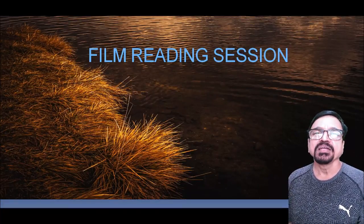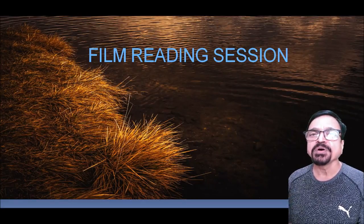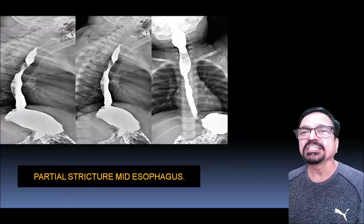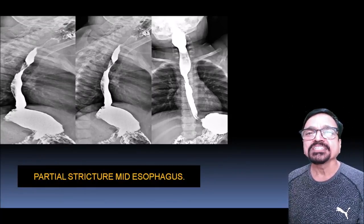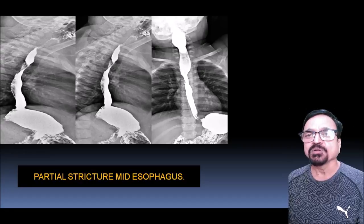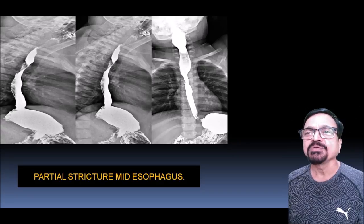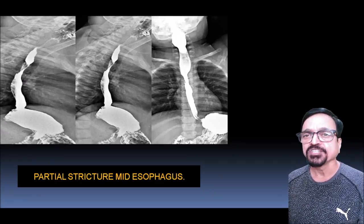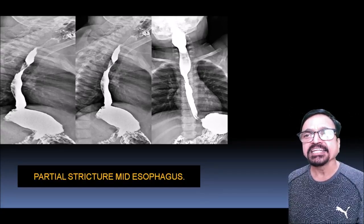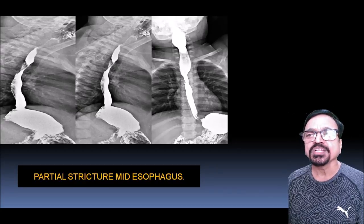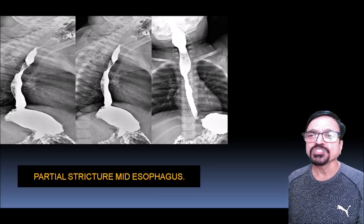With a brief idea of technique and lesion interpretation, we now come to the film reading session where we will see multiple cases and learn how to diagnose them. The suggestion is: don't look at the diagnosis first — analyze the image first. In the first case, there is a dilated upper esophagus due to narrowing in the mid-esophagus. A long stricture at the mid-esophagus is causing dilatation of the proximal portion.